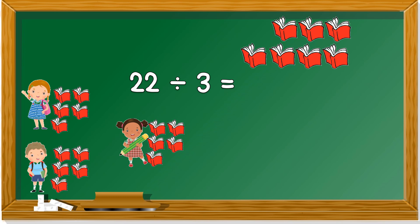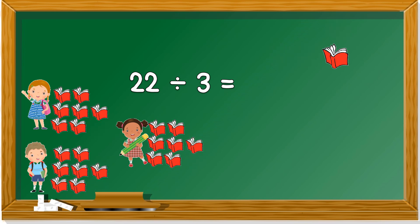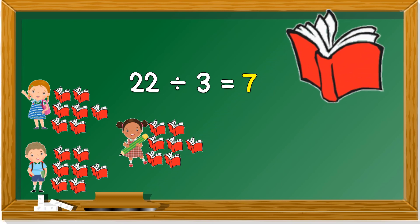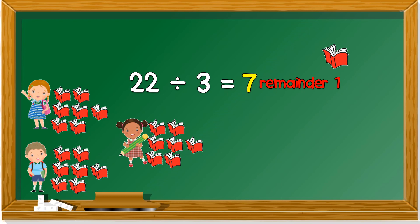Now each kid has how many books? 5. How many books are left? There are 7. Can we still continue giving equally? Yes. Now we left 4. Can 4 books be given to 3 children? Yes, we can still continue giving. Now we are left with 1 book. 1 book cannot give 3 children. So, let us count how many books each child has. There are 7. With the remainder, how many? Remainder 1. Remainder means baki.